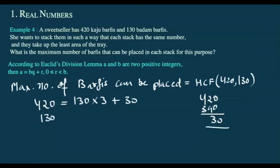Now 130 becomes the dividend and 30 becomes the divisor. 30 times 4 gives 120, and the remainder is 10.